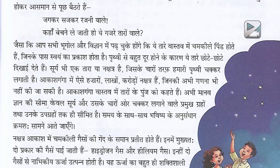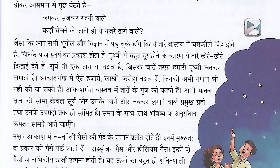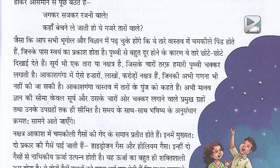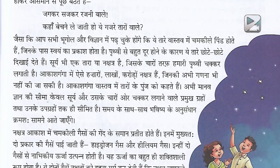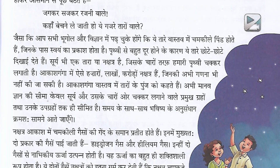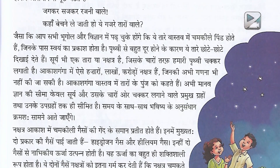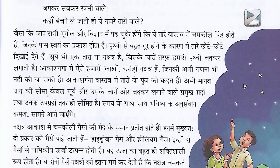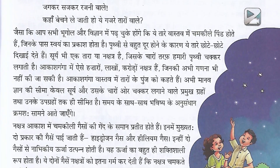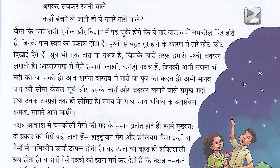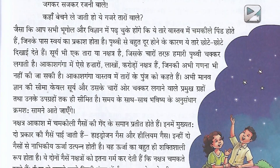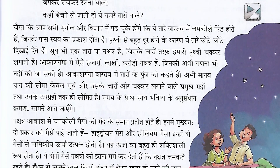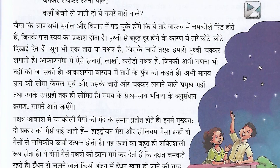ऐसे हजारों, लाखों, करोणों नक्षत्र हैं जिनकी अभी गणना भी नहीं की जा सकी है। आकाश गंगा वास्तव में तारों के पुंज को कहते हैं। पुंज means समूह, ढेर — means a large amount or number of something. (There are thousands, lakhs, crores of nakshatras that have not yet been counted. The galaxy is actually a cluster of stars; 'punj' means a group or large number of something.)